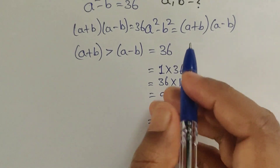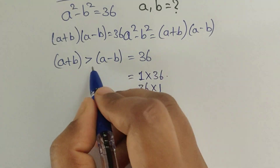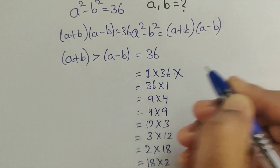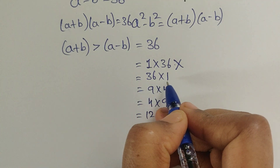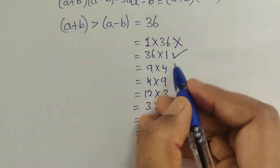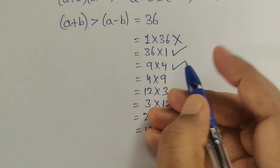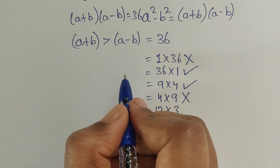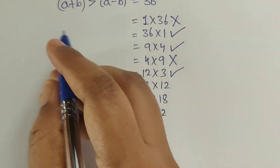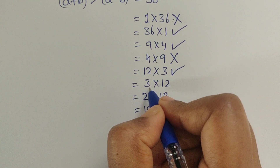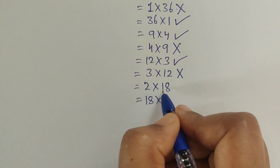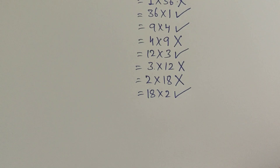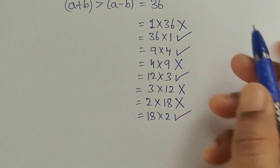Now we check which factor pairs satisfy the condition that the first factor is greater than the second. 1×36: 1 is less than 36, not satisfied. 36×1: 36 is greater than 1, satisfied. 9×4: 9 is greater than 4, satisfied. 4×9: 4 is less than 9, not satisfied. 12×3: 3 is less than 12, not satisfied. 2×18: 2 is less than 18, not satisfied. 18×2: 18 is greater than 2, satisfied.